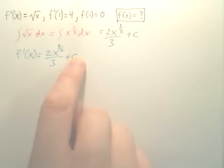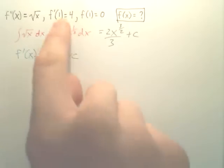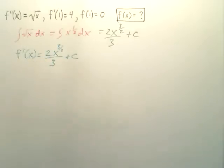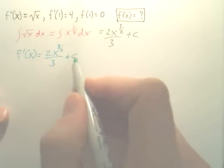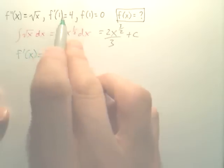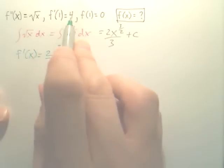But it has a plus c. We don't have a particular, this is the general. But do we have information to make this, to find c? Yes. In order to find c and find the particular solution, we know x is one, we know y is four, or the output's four.